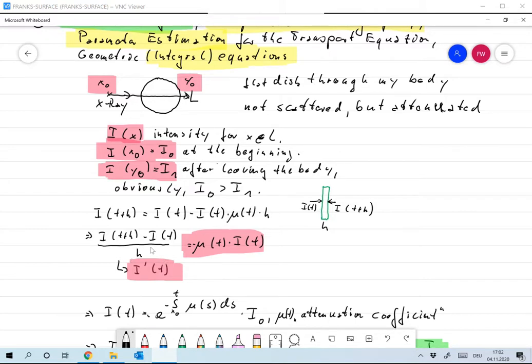Okay, now let h tend to zero, then this converges to I'(t). And we get the ordinary differential equation I'(t) = -μ(t) times I(t), where now μ(t) is the strength of the loss, or the strength of the attenuation, at point t here on this line L.